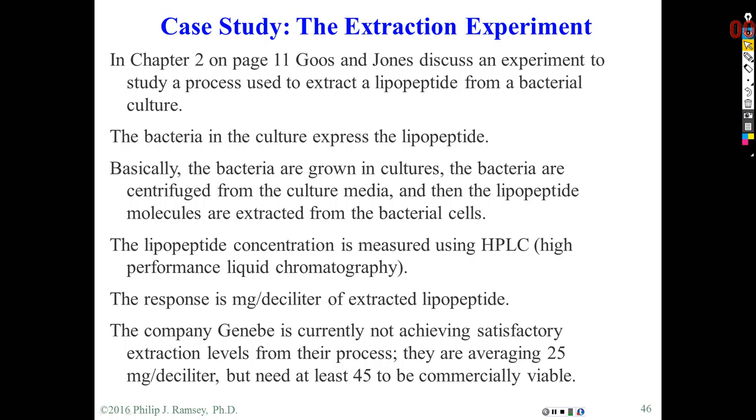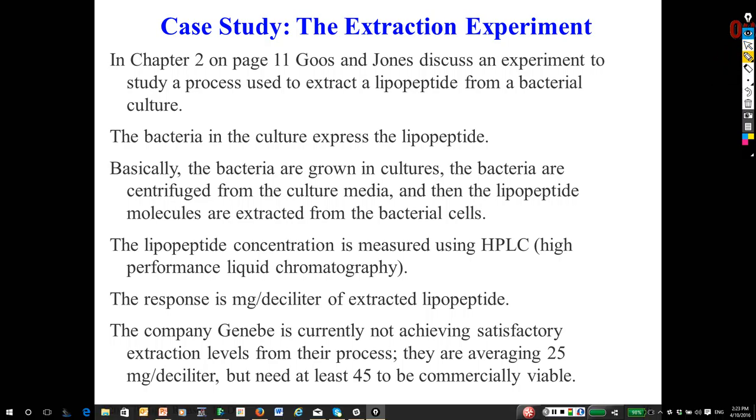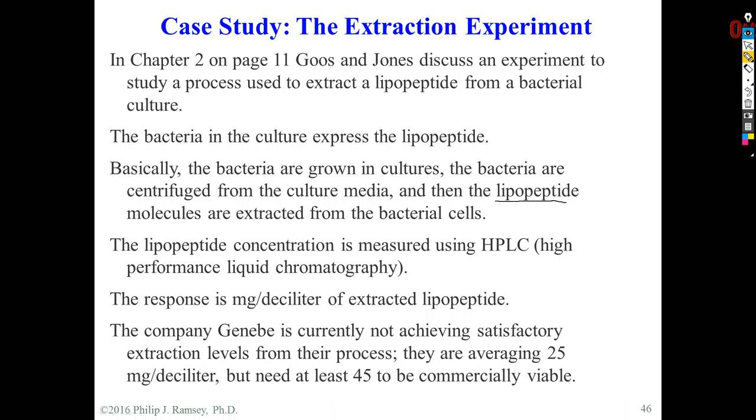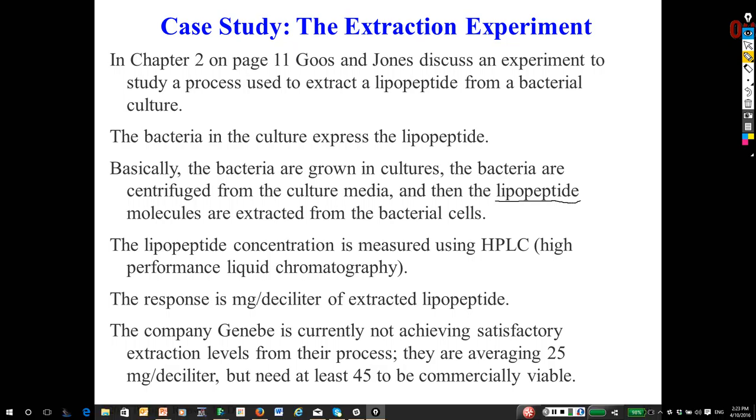In this particular video, we're going to focus on a case study from chapter two of Goos and Jones. This is a biomanufacturing process where they're using E. coli to produce a particular biomolecule of interest to them. In this case, it's a lipopeptide, which is used as a preservative in some types of food, and their lipopeptide yields have not been high enough.